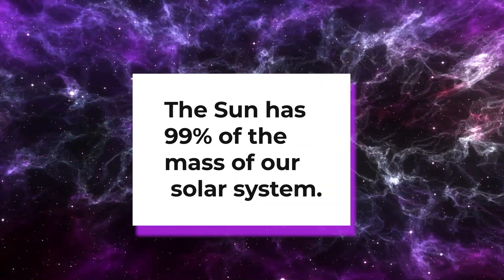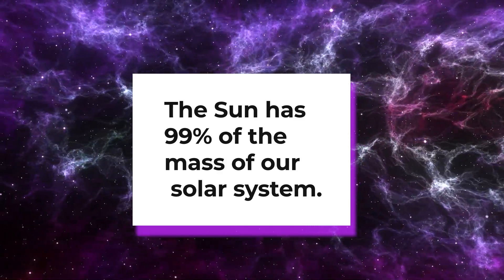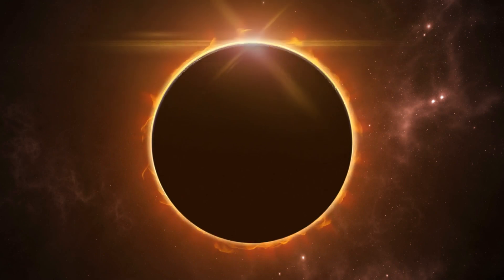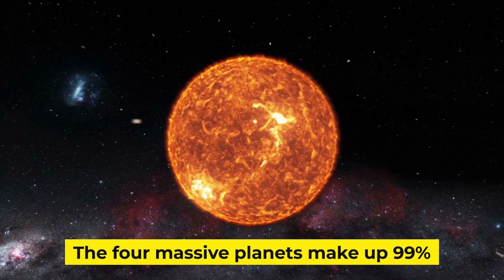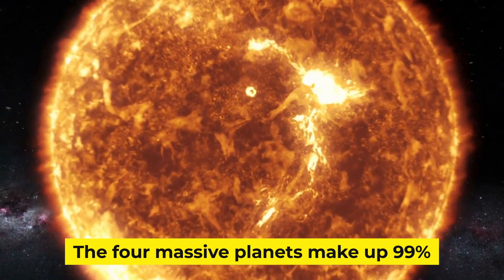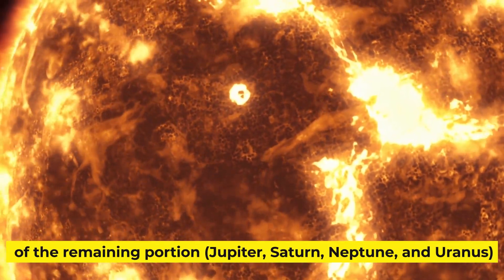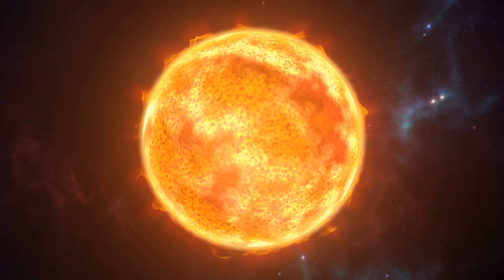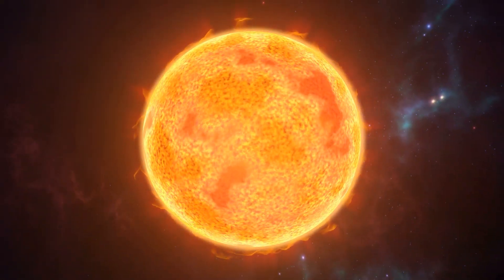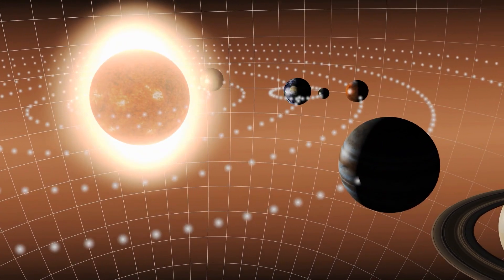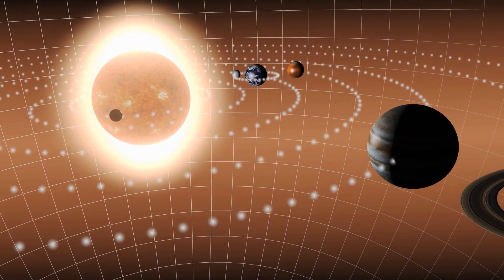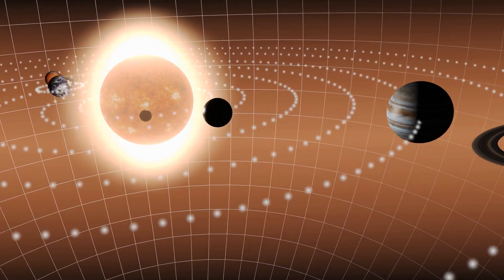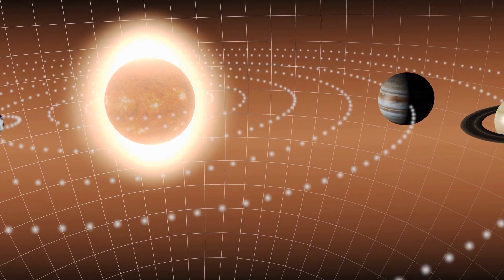Number 8. The Sun has 99% of the mass of our solar system. Amazingly, the Sun accounts for 99.86% of the mass of our solar system. The four massive planets make up 99% of the remaining portion: Jupiter, Saturn, Neptune, and Uranus. The surviving solar system objects, the surviving terrestrial planets Mercury, Venus, and Mars, dwarf planets, moons, asteroids, and comets are left with just 0.002% of the total mass of the solar system.